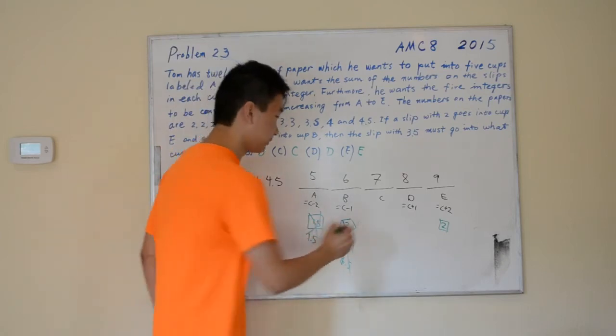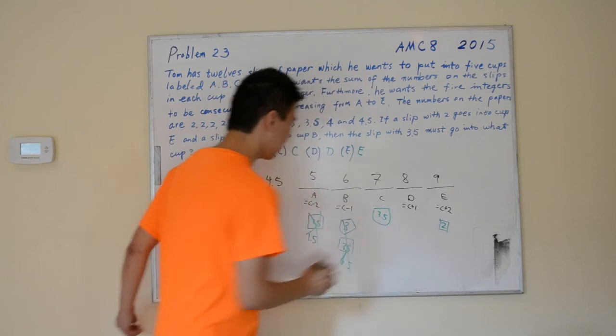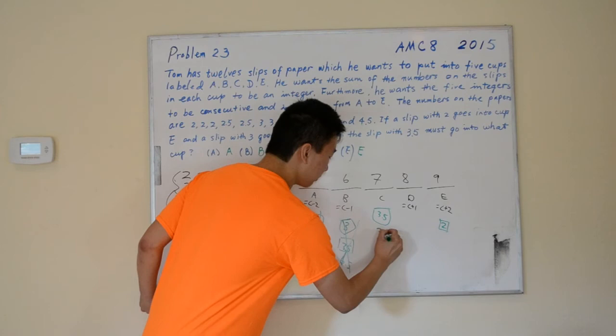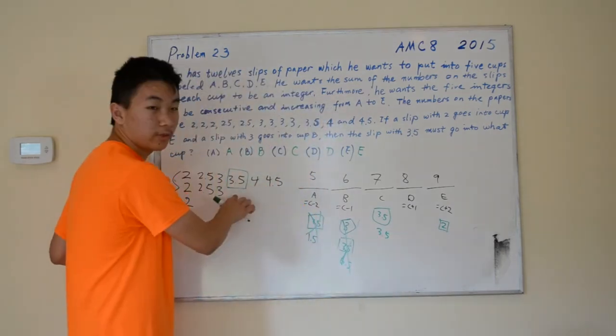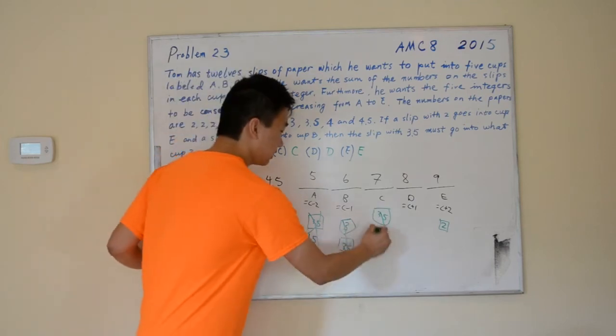Let's try putting it into 7. If we put it into 7, what we're left with is 3.5. There's only one 3.5, and there's nothing that can create 3.5, so this is not possible.